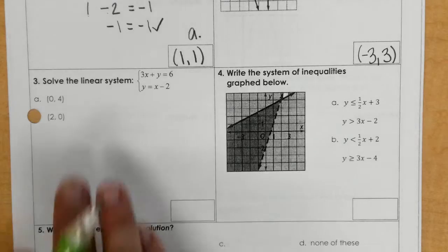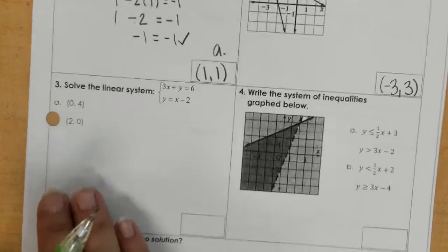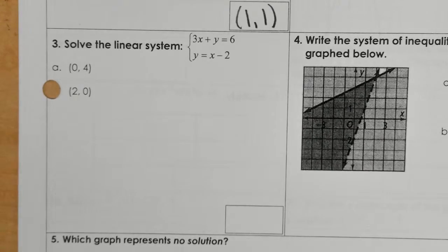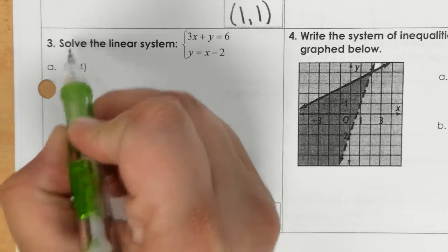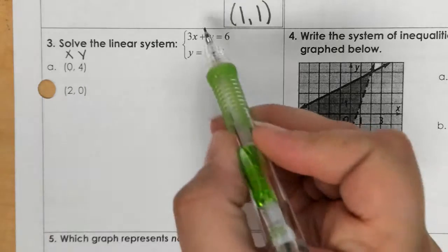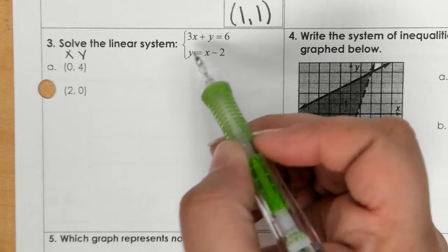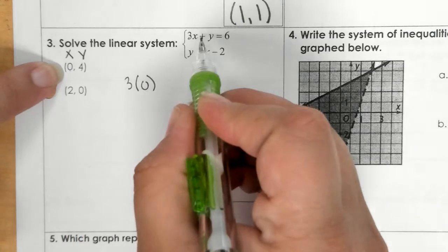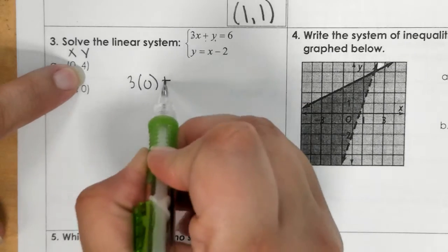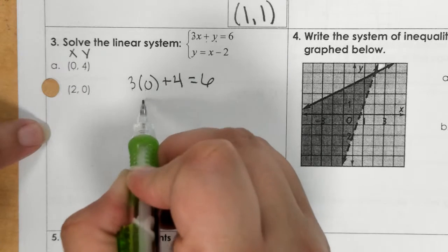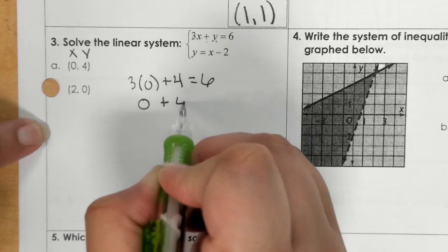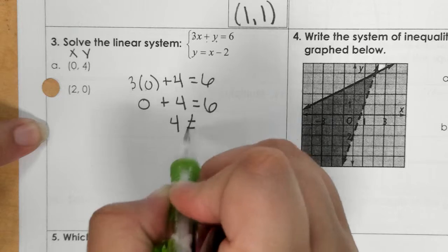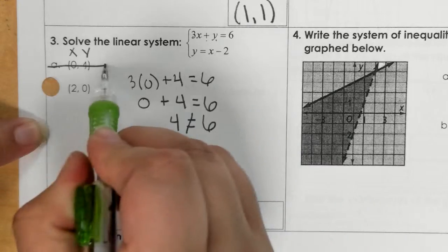So in number 3, you could do it the same way as number 1. So you could just plug in the points. It's kind of hard to see them. So we would have x and y again. And when looking at this, it doesn't matter which equation you try first. So we'll just try the top one. So 3 times 0 plus the y, y is 4. 3 times 0 is 0 and 0 plus 4 is 6. Well, we can see that 0 plus 4 does not equal 6. So we know that A is not a solution.